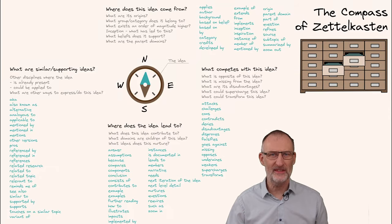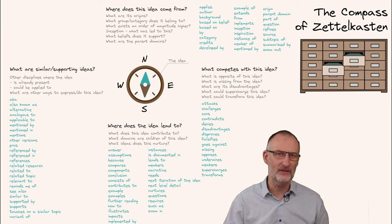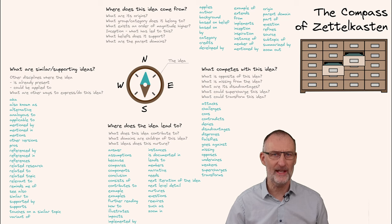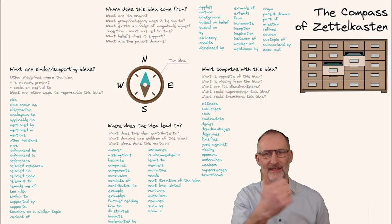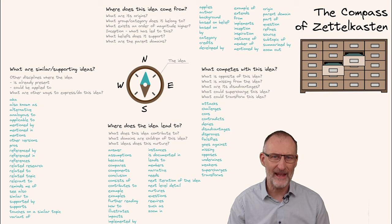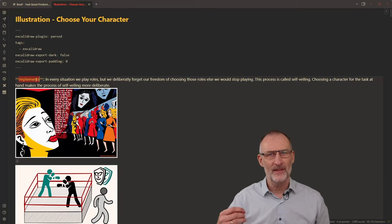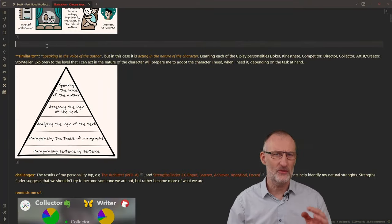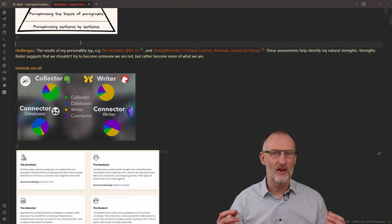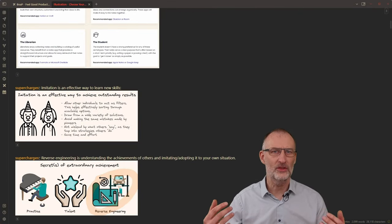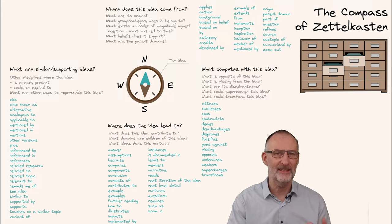Earlier, I introduced the Compass of Zettelkasten, a concept I learned about from Vicky Zhao and Fei-Ling Chang at the Linking Your Thinking conference. This compass is a powerful tool for organizing your thoughts, guiding you in different directions: North, South, West, and East. In our exploration today, we're leveraging this concept in the context of the periodic table of productivity. These fields — implements, similar to, challenges, reminds me of, supercharges — follow the Compass of Zettelkasten, creating a structured framework, or ontology, for understanding and connecting ideas.